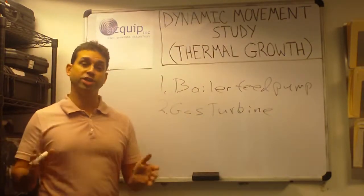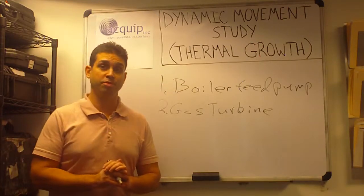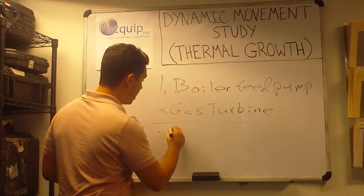Now, there are a few traditional methods that we use instead of conducting a dynamic movement study. One of those is a hot alignment check.